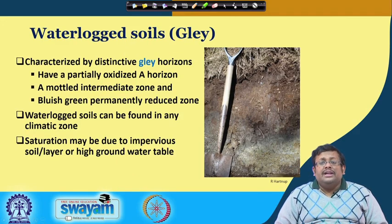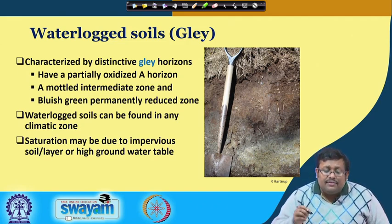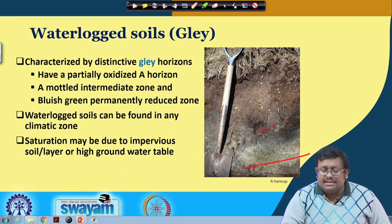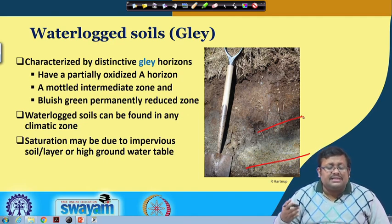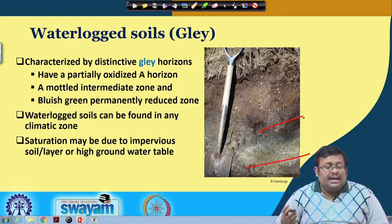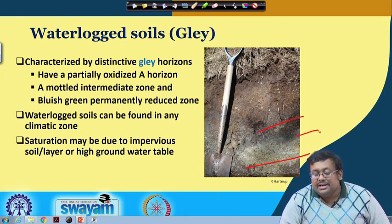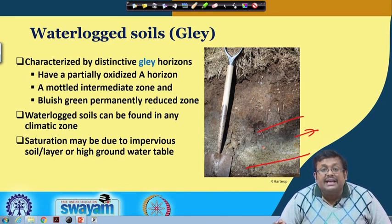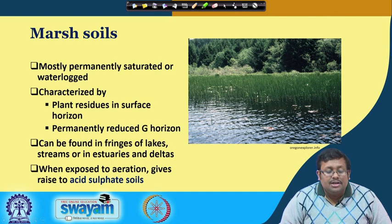Waterlogged soils are called glayed soils, characterized by a distinctive glay horizon. This glay horizon has a partially oxidized A horizon, a mottled intermediate zone, and a bluish-green permanently reduced zone. Waterlogged soils can be found in any climatic zone, and saturation may be due to an impervious soil layer or high groundwater table.